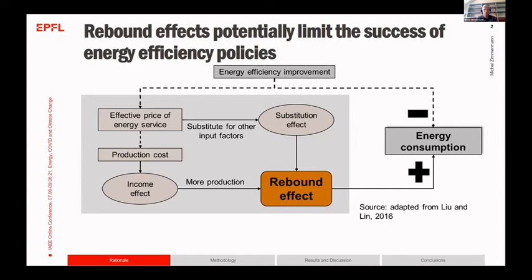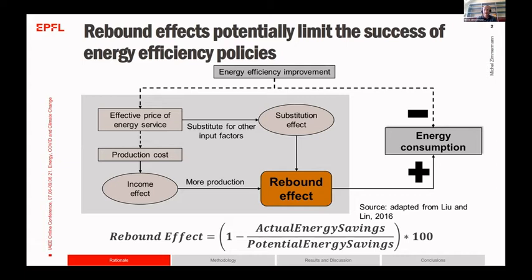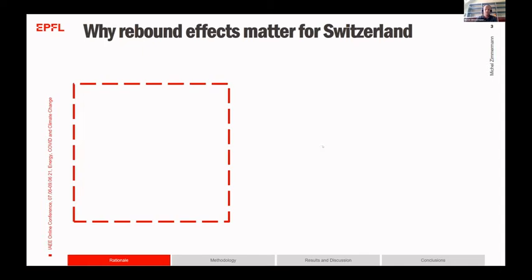These two effects are a major component of the so-called rebound effect at the microeconomic level. Rebound effects could also manifest at a higher level of aggregation, for example at the meso and macroeconomic level. In total, you can calculate a rebound effect by comparing actual energy savings with the potential energy savings anticipated from the energy efficiency improvement itself.